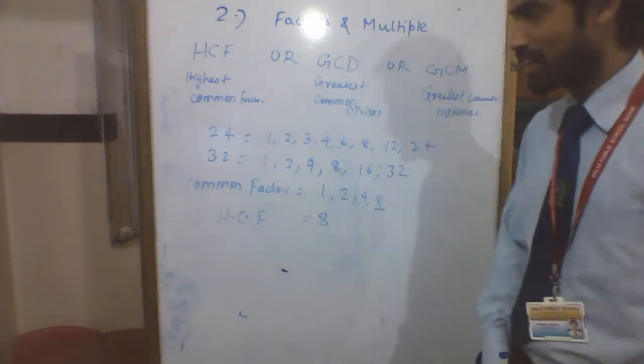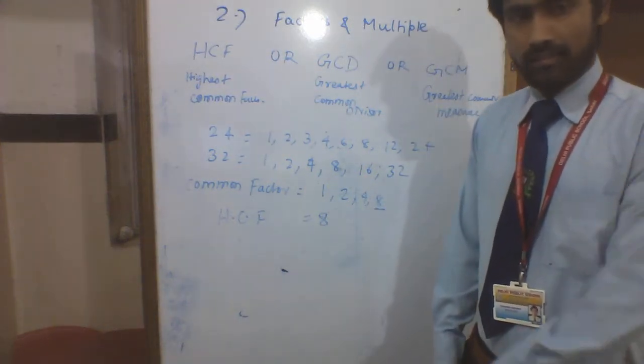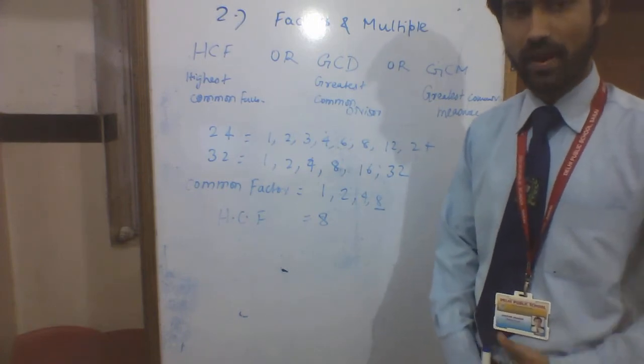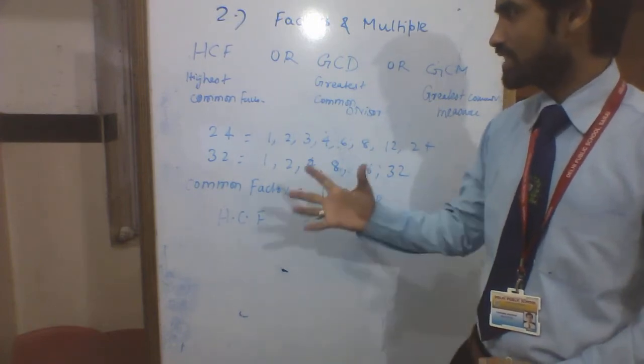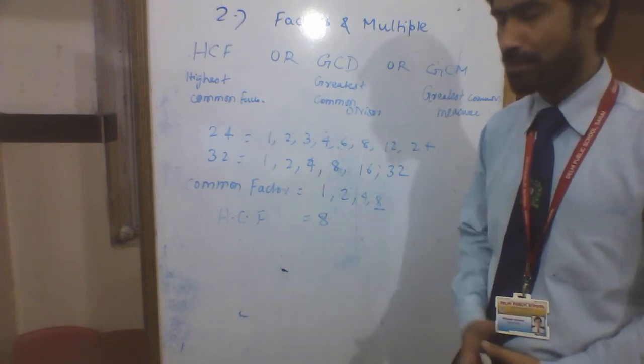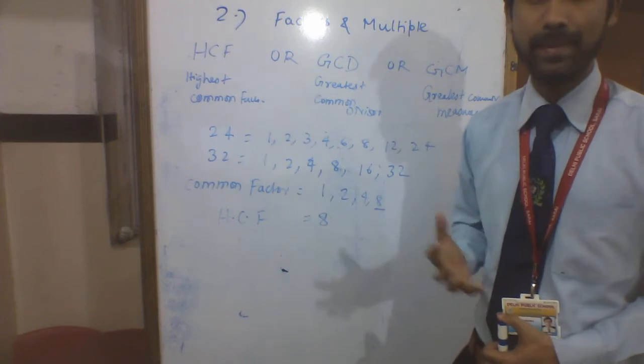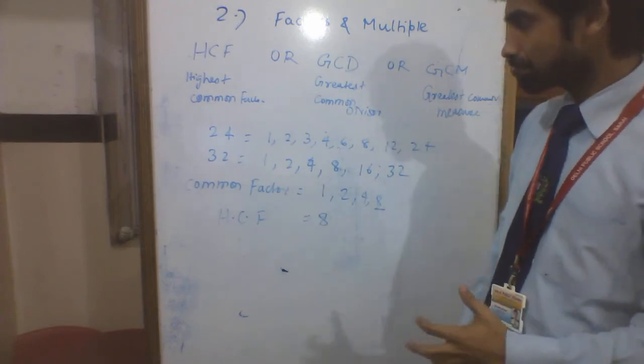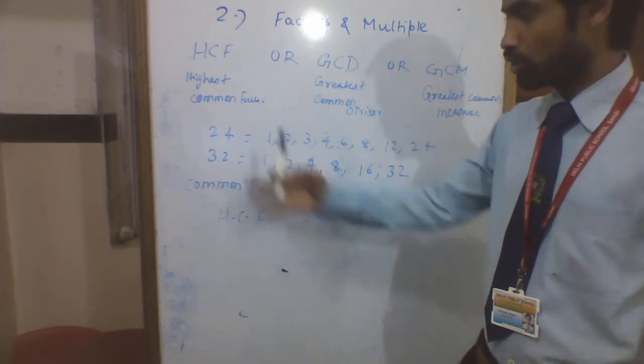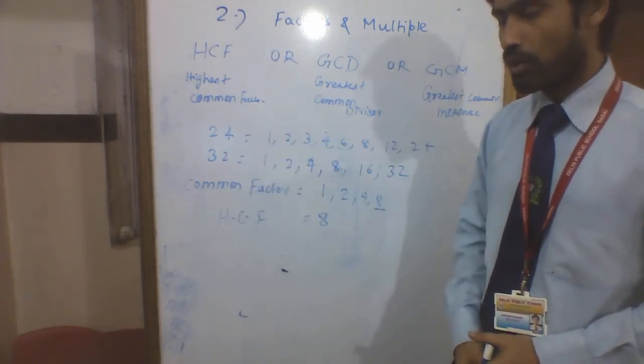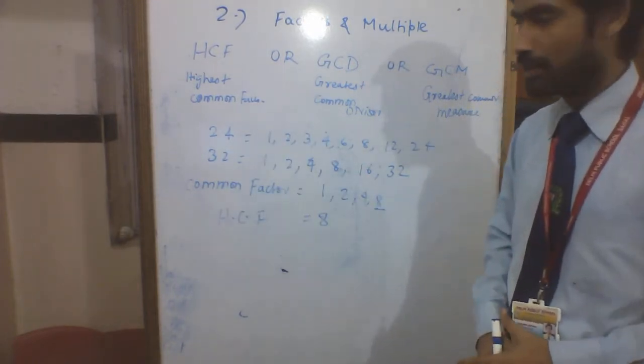Very good morning to all my viewers. Today we will learn a new topic: HCF, highest common factor. HCF is also known as GCD, greatest common divisor, and GCM, greatest common measure. So for two numbers, we will find the common factor, then the highest common factor.